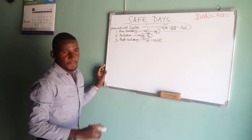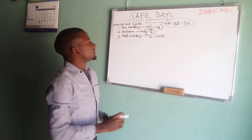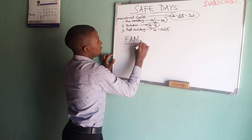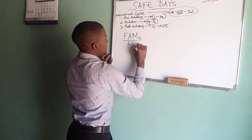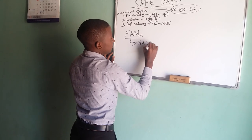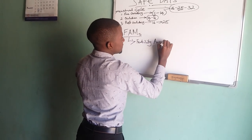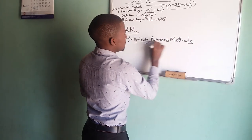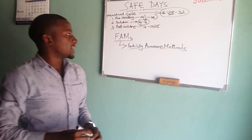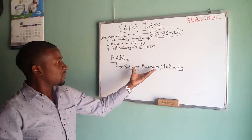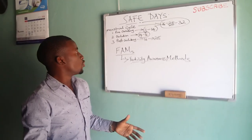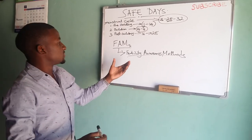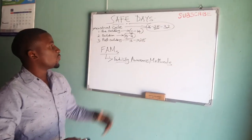Safe days fall under a broader term — the Fertility Awareness Methods (FAM). It is under these fertility awareness methods that we can determine our safe days. Fertility awareness methods are the methods we use to know the time when ovulation will take place, and the same methods we use to know which days are safe for us.